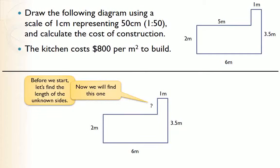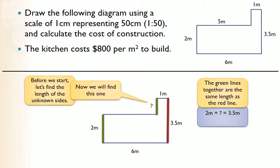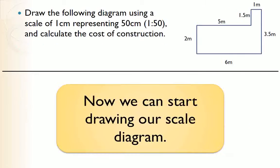Similarly, for the other unknown side: question mark plus two equals 3.5, because the total red length is the same as the two green lengths added together. So two meters plus the unknown equals 3.5, meaning the unknown is 1.5 — calculated by doing 3.5 minus 2. You can check: 1.5 plus 2 gives 3.5. Label the 1.5 on the diagram. Now we know all the side lengths and can start drawing the scale diagram.